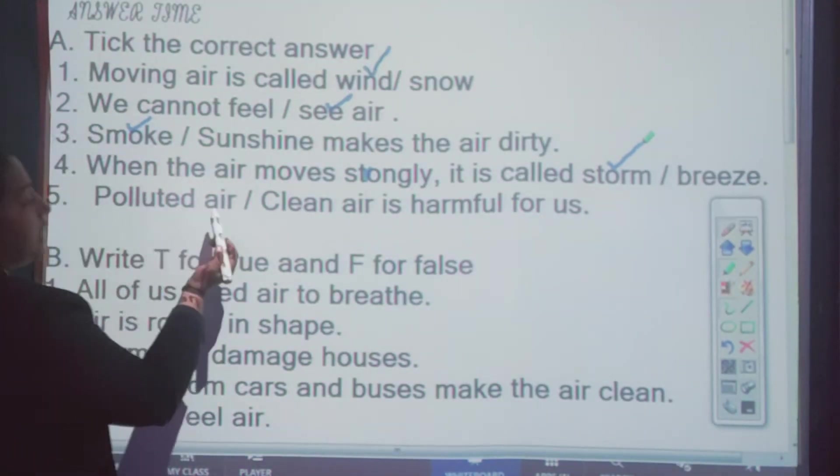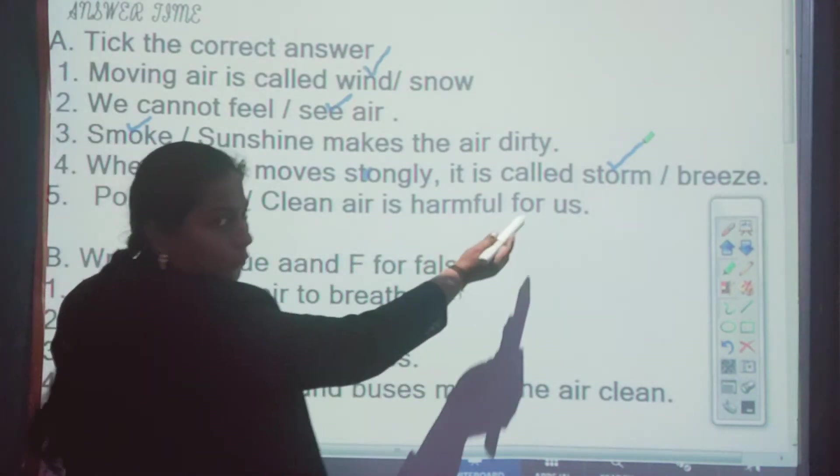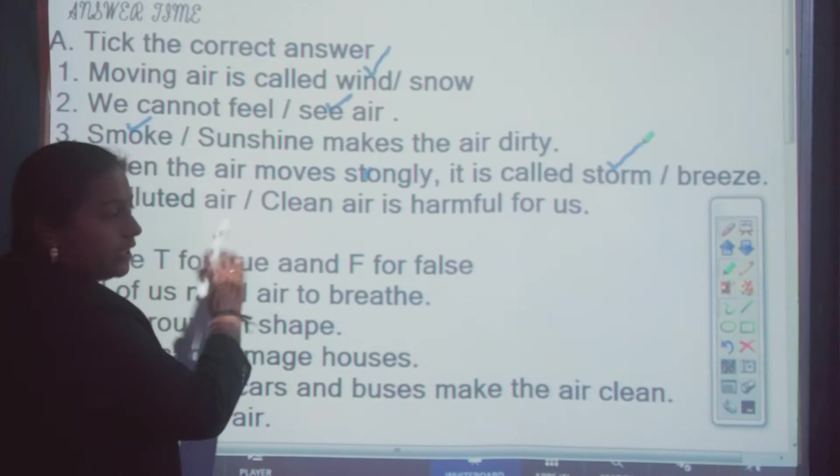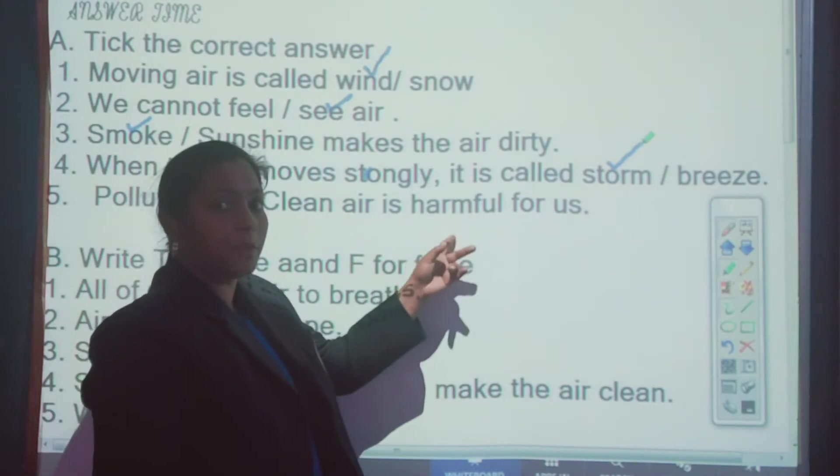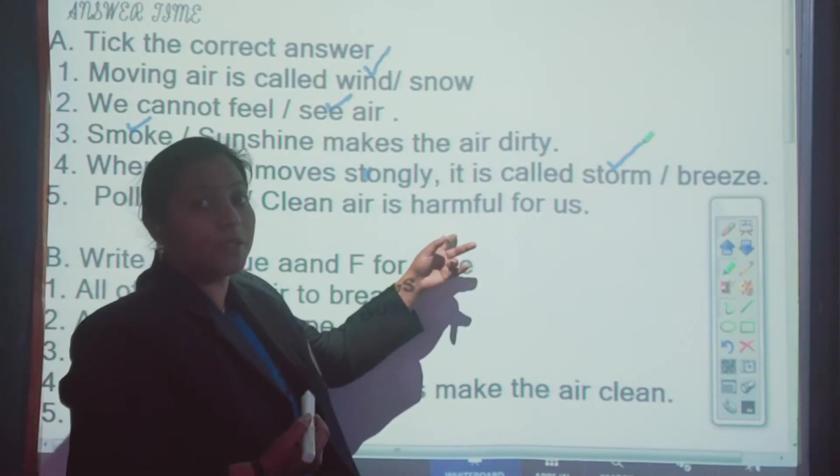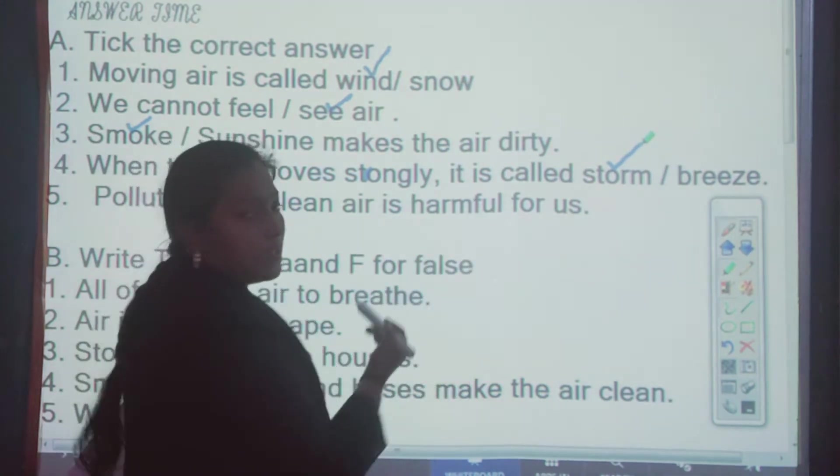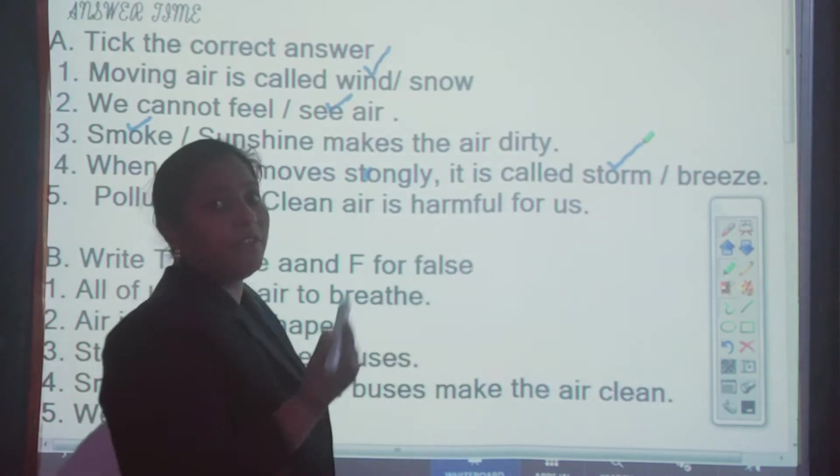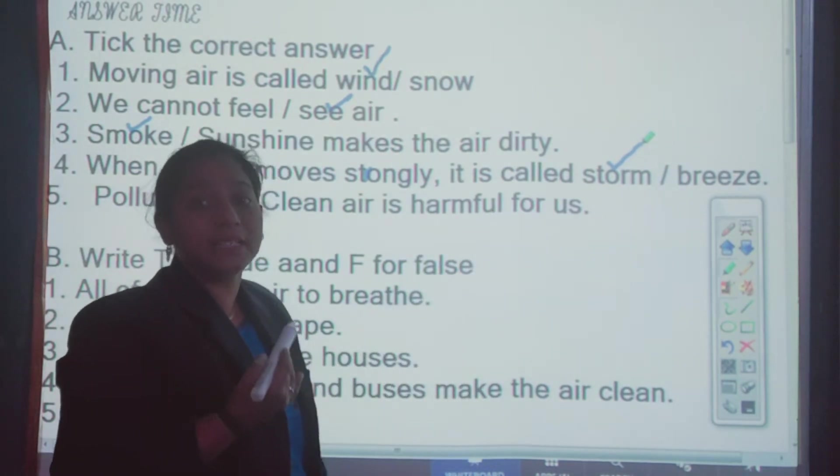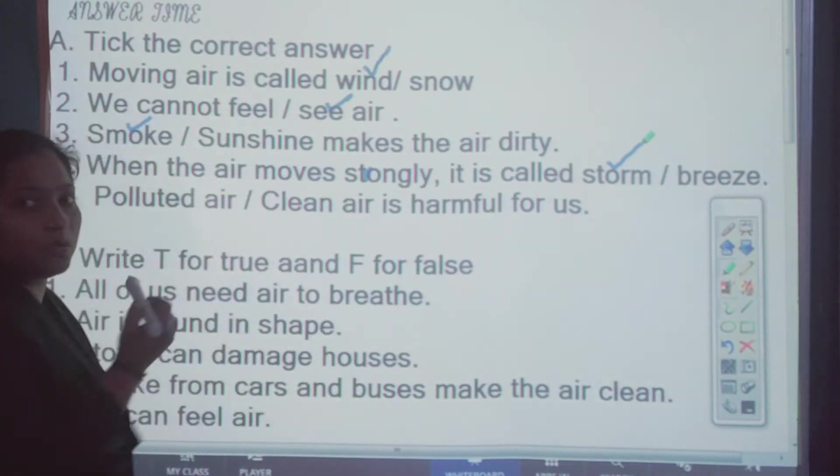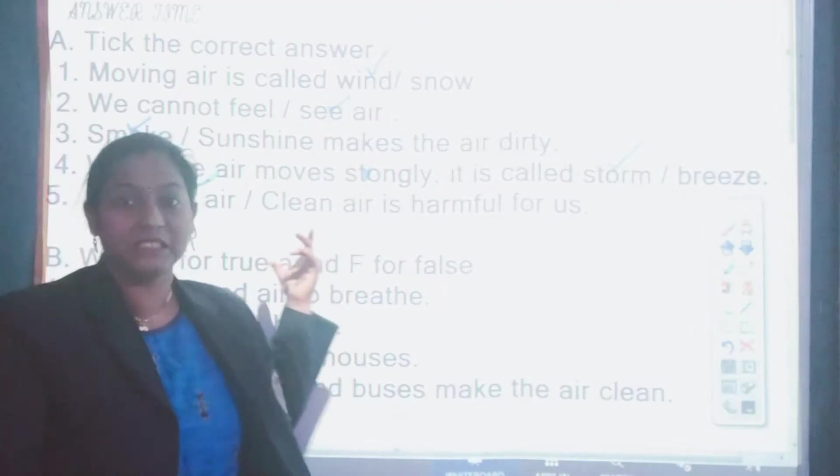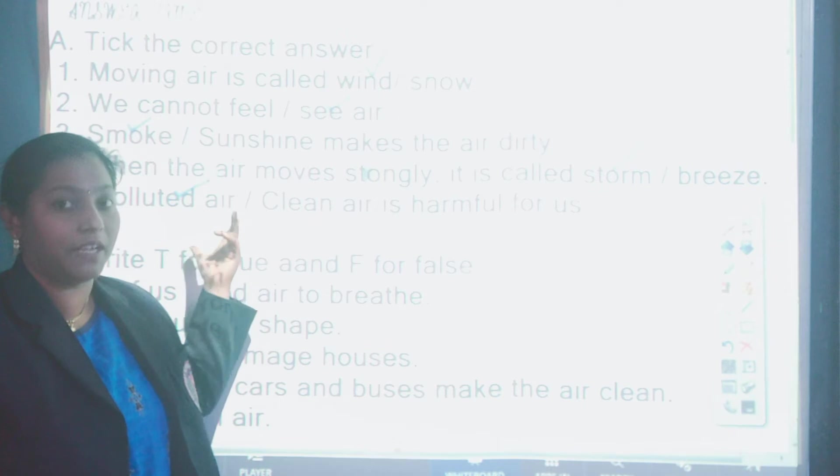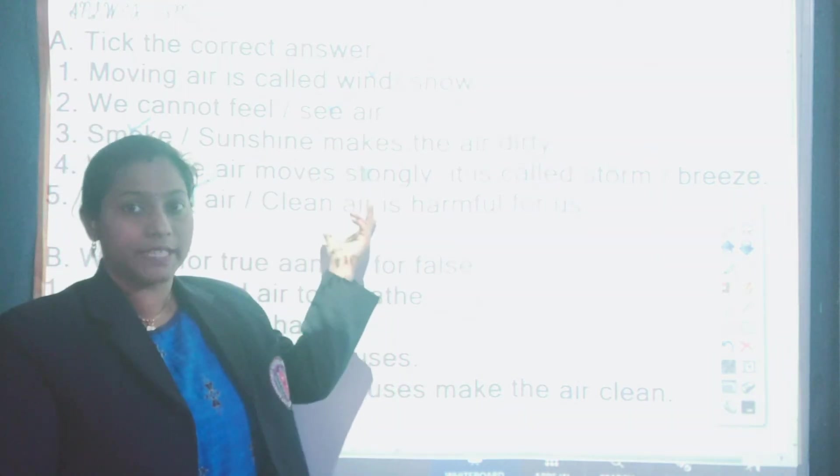Fifth, polluted air or clean air is harmful for us. Polluted air means dirty air. Clean air means soft air. Harmful means jo hamare liye dangerous hai, jo hume bimaar kar sakta hai. So which air is harmful for us? Harmful means which is not good for us, which makes us sick, jo hume bimaar kar sakta hai. So the answer to this is polluted air. That is the dirty air. Jab air gets dirty, it gets polluted, gandagi jab ho jati air. So this was tick the correct answer.